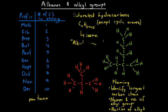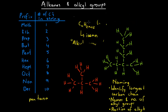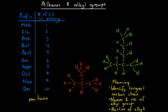Looking at this first example, we want to name this red molecule. The longest carbon chain contains three carbons — whichever way we look at it — so we start with propane. No matter which chain we consider, we've got a carbon coming off the middle carbon of that three-carbon chain. There's only one carbon in that side group, so we call it a methyl group.